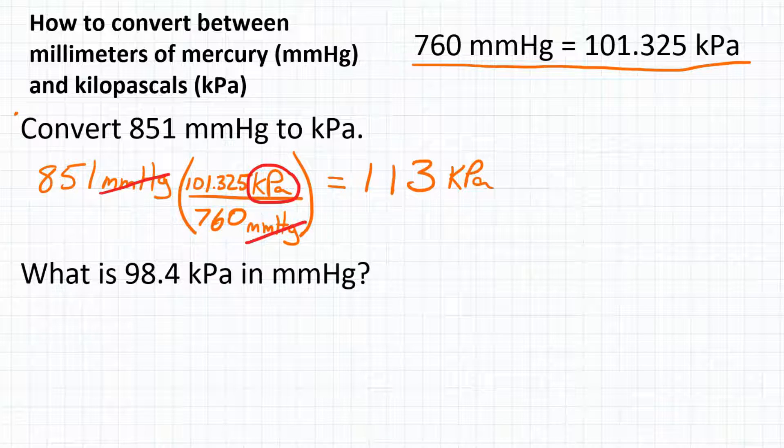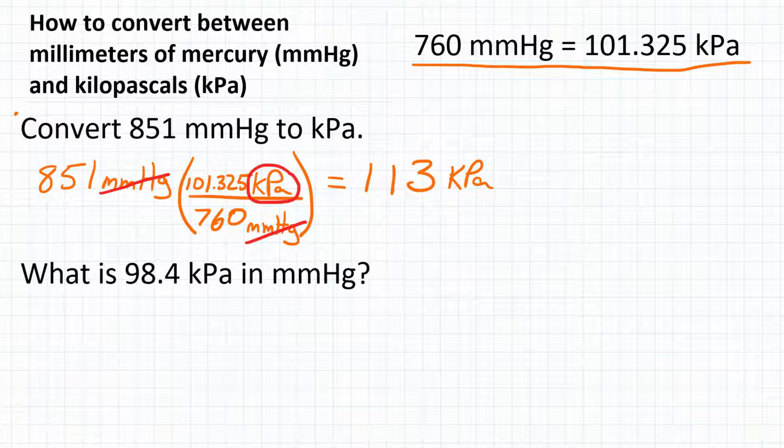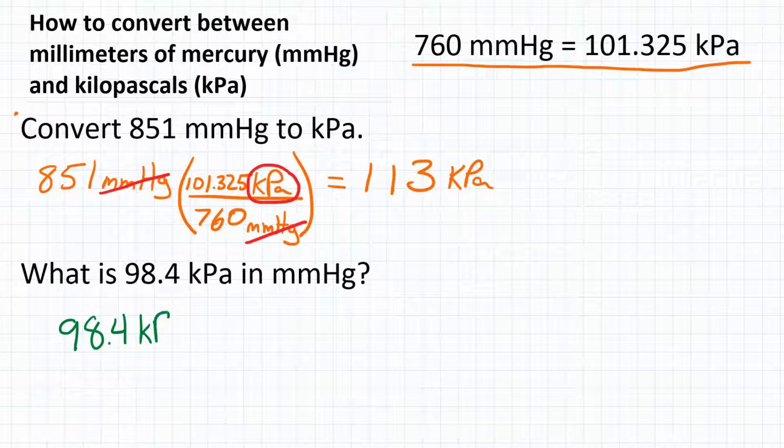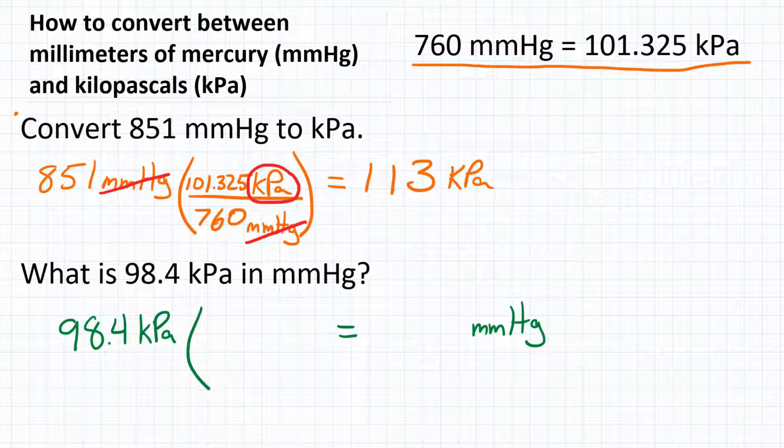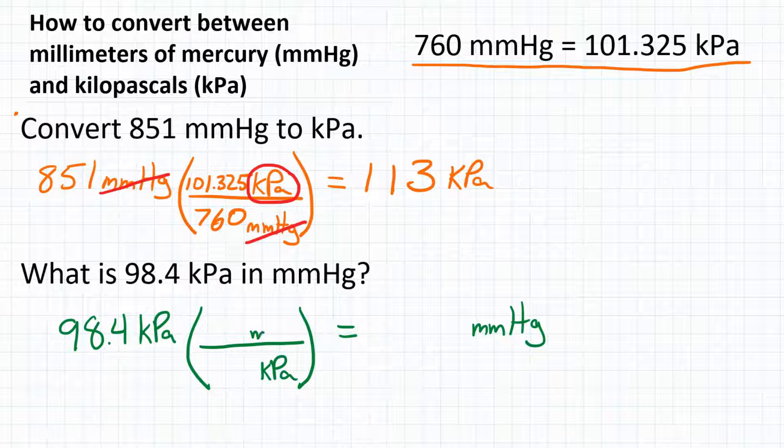What if we're going in the opposite direction? What if we're going kPa to millimeters of mercury? In this problem, if we have 98.4 kPa, and we want to turn that into millimeters of mercury, it'll be just like above. We're going to have one conversion factor. This will be a one-step conversion.